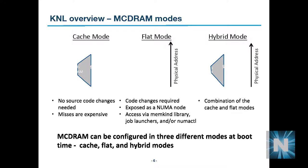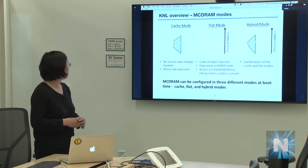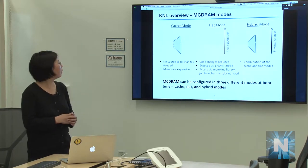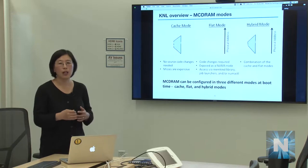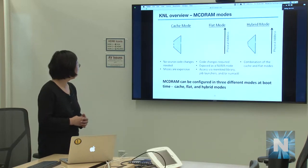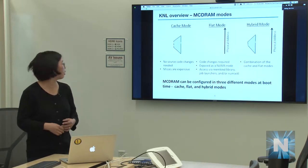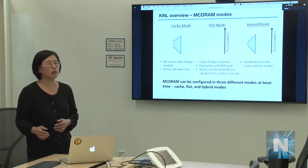The MCDRAM mode setup is relevant to both compile and runtime on Cori. In cache mode, the high-bandwidth memory is treated as a transparent cache — no code changes needed. In flat mode, you can explicitly place your data into MCDRAM. There is also a hybrid mode, where you can split the MCDRAM 50/50 or 75/25 between cache and flat.